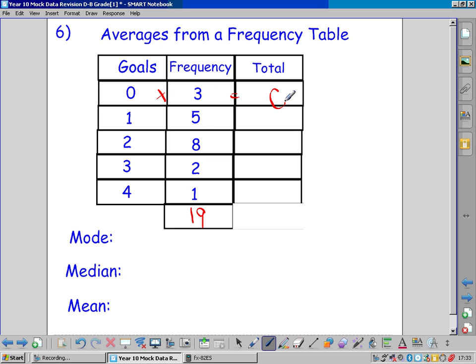5 games with 1 goal, 5 goals. 8 games with 2 goals, 16 goals. 2 games with 3 goals, 6 goals. 1 game with 4 goals, 4 goals. So these are all our goals, our total goals for each row.